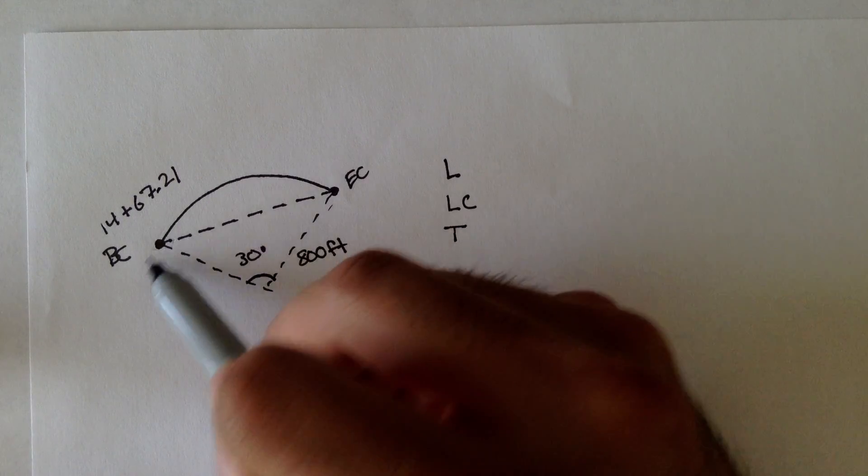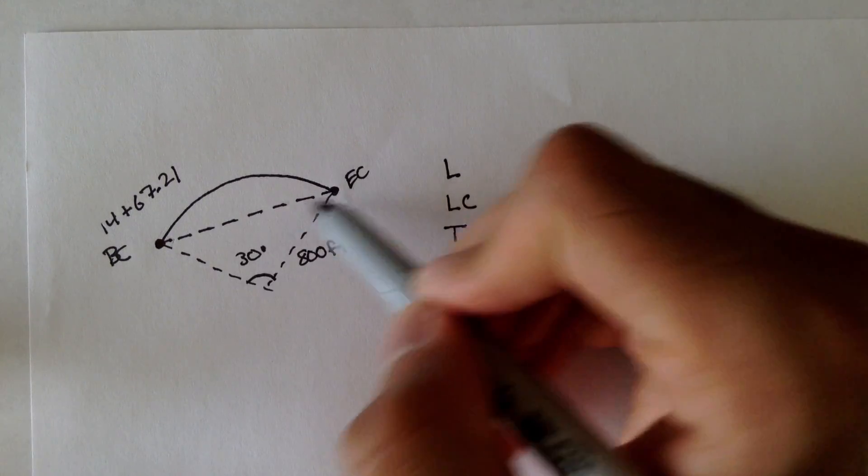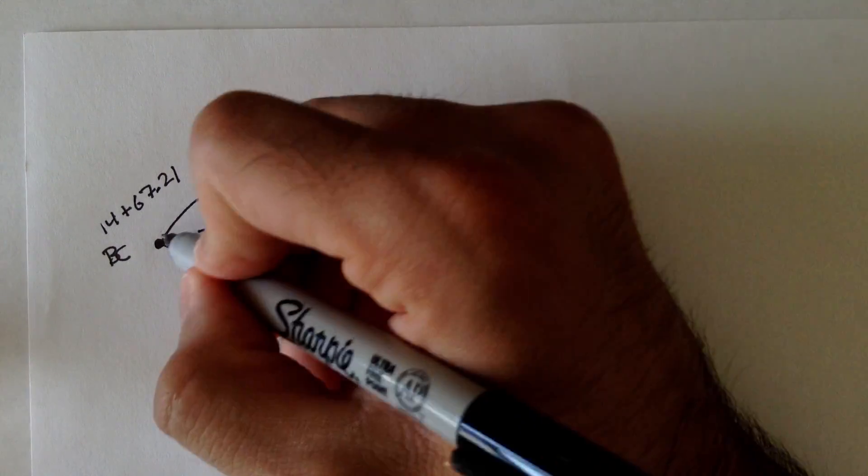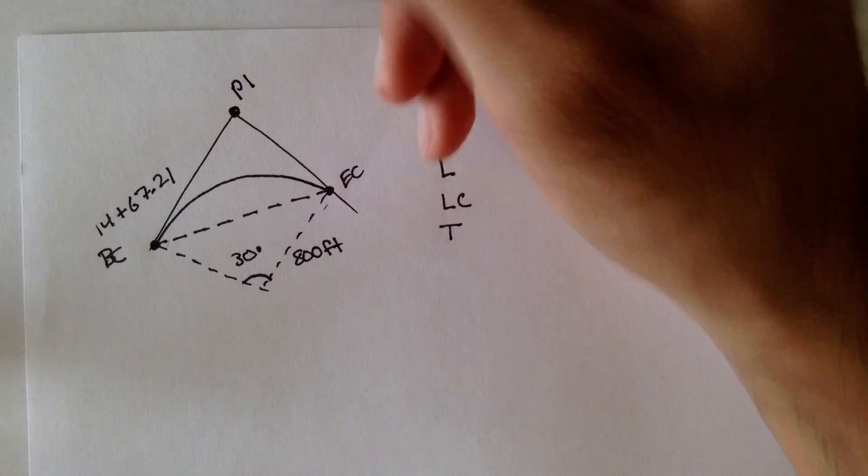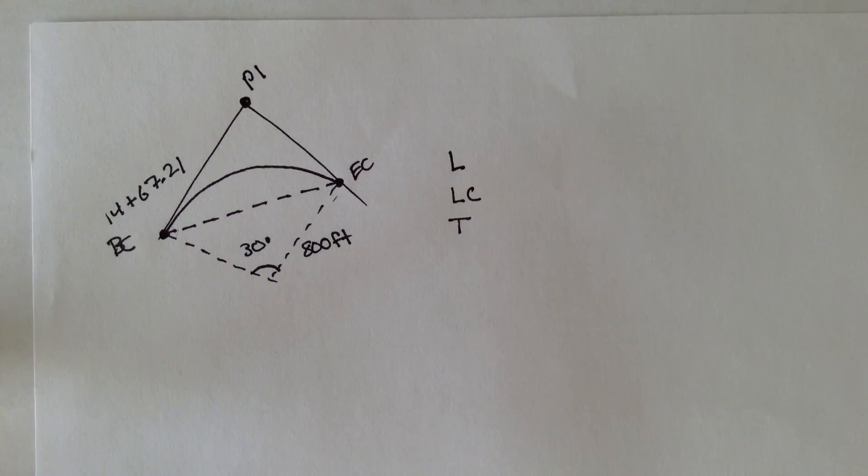And we also want to figure out what the tangent is. Remember, the tangent is the tangent line to the BC or the EC to the point of intersection. The point of intersection is somewhere over here. This is the PI.